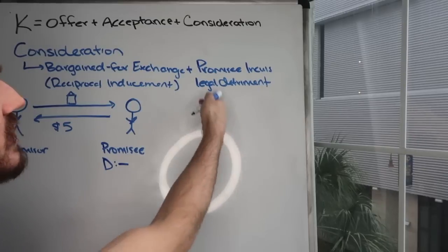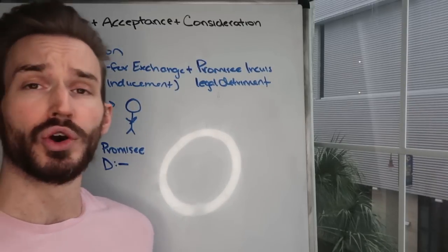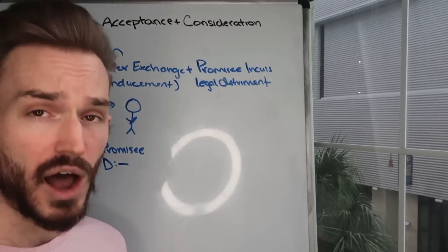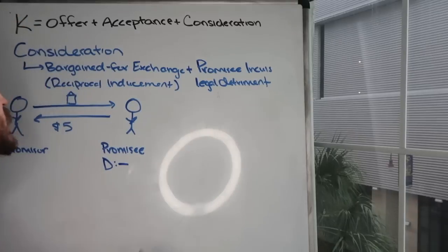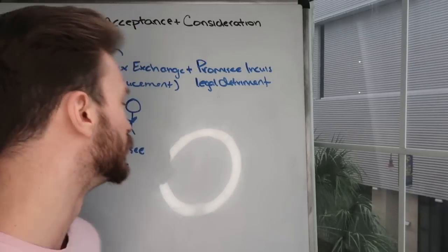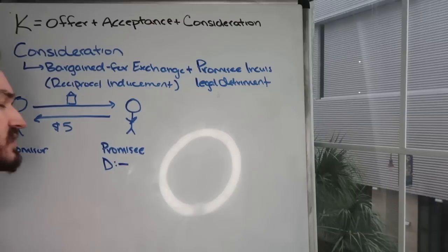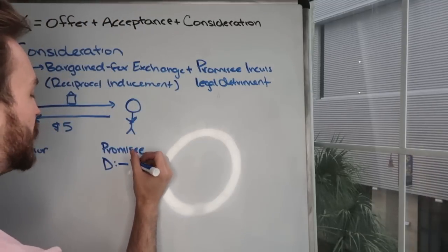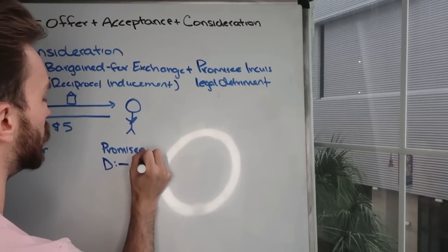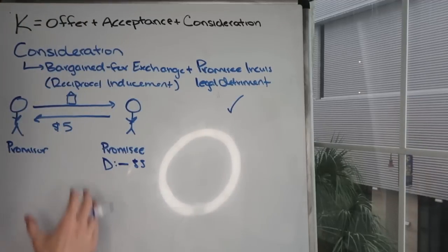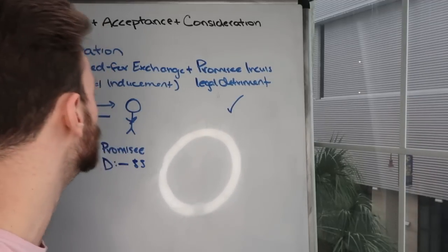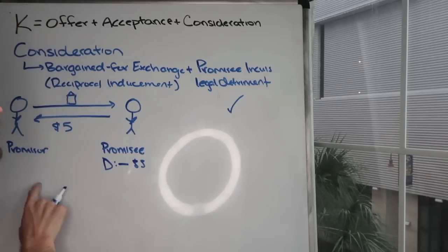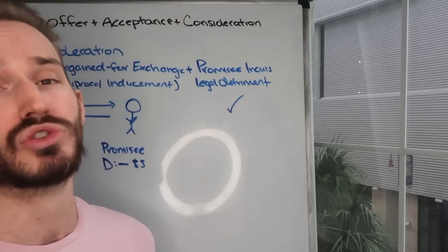Let's talk about legal detriment. Do you, the promisee, incur a legal detriment in this deal? Yes — you're giving me $5 that you have no legal obligation to give me. You are incurring a legal detriment of $5, so this element is met. Now, do we have a bargain for exchange? Is the promise inducing the detriment, and is the detriment inducing the promise? This is called reciprocal inducement.